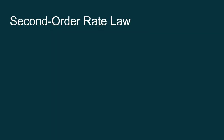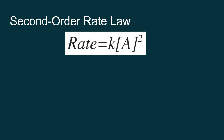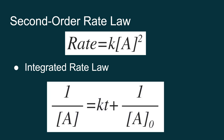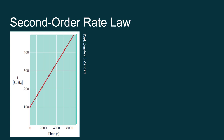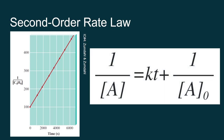We also have second order reactions, where rate equals k times the concentration raised to the power of 2. We can do an integrated rate law for this and get a totally different equation. When set up as the equation of a line, it looks like: 1 over the concentration of A equals the positive value of the slope times time, plus the inverse of the initial concentration. So to use this equation, I'm going to graph the inverse of concentration versus time. For a second order reaction, you graph the inverse of concentration on the y-axis and time on the x-axis, and you get a nice linear relationship. The positive value of the slope gives you your rate constant, and your y-intercept is the inverse of your initial concentration.